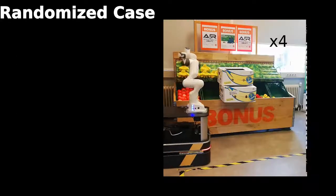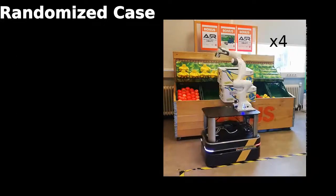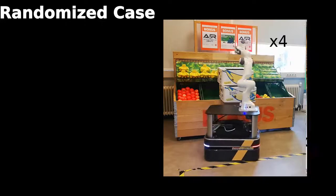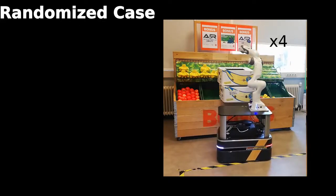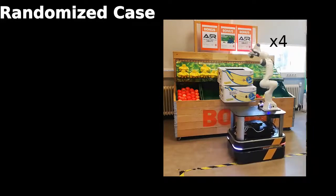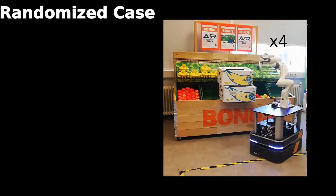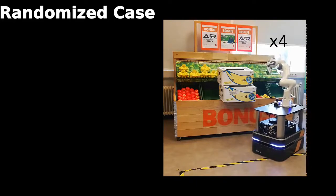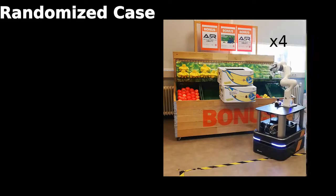The method was also implemented on a real mobile manipulator consisting of a Clearpath Husky and a Franka Emika Panda. In this scenario a bell pepper needs to be placed in a basket on the right side of the blocking boxes while being picked up on its left side. Collision avoidance in this static environment is realized using the free space decomposition.